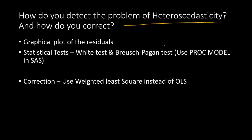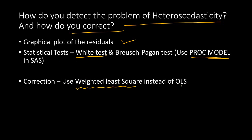How do you detect and correct the problem of heteroscedasticity? A graphical plot is a good method, but there are also statistical tests such as the White test and the Breusch-Pagan test. You can also use PROC MODEL in SAS to compute these statistics. To correct heteroscedasticity, one approach is to use weighted least squares instead of ordinary least squares, which can handle the change in variation in cross-section data.